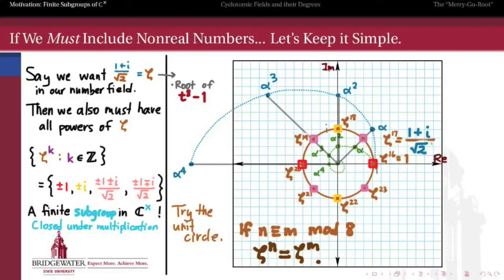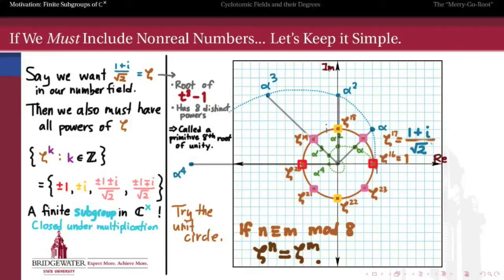So what is this zeta? This zeta is a root of the polynomial t to the eighth minus 1, because zeta to the eighth is equal to 1. Not only that, it has eight distinct powers — zeta to the first through eighth are all different complex numbers arranged around the unit circle. That actually makes it a primitive eighth root of unity: it's an eighth root of the number 1, and it's primitive because it generates all of the other numbers which satisfy t to the eighth equals 1. In general, we can write a primitive nth root of unity as e to the 2 pi i over n. So in this example, n equals 8, and zeta 8 is e to the 2 pi i over 8, or equivalently e to the pi i over 4.